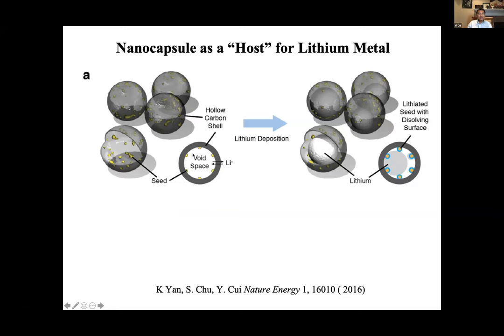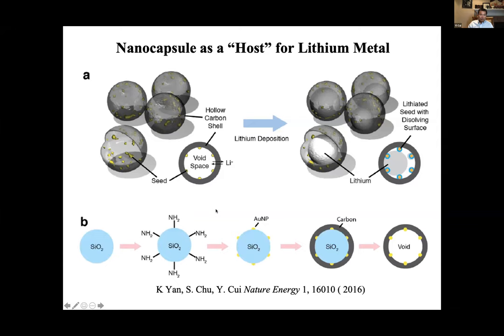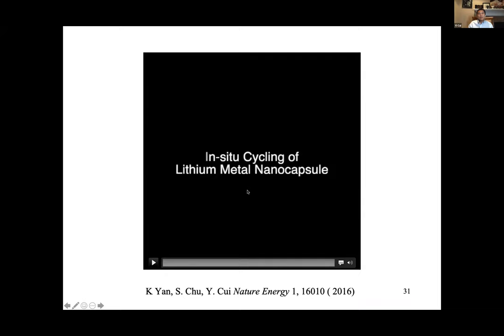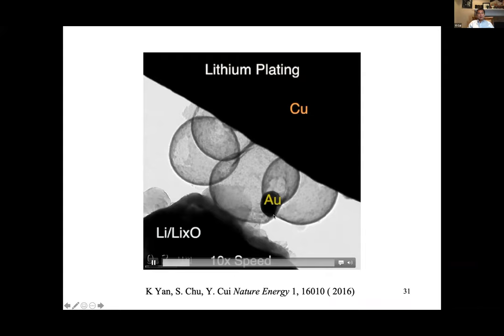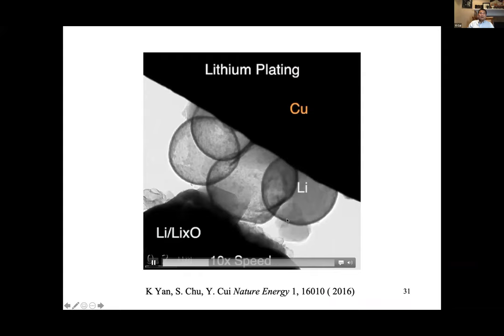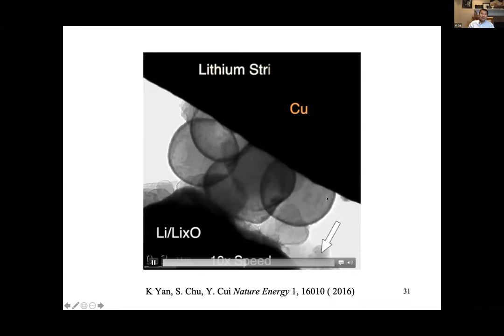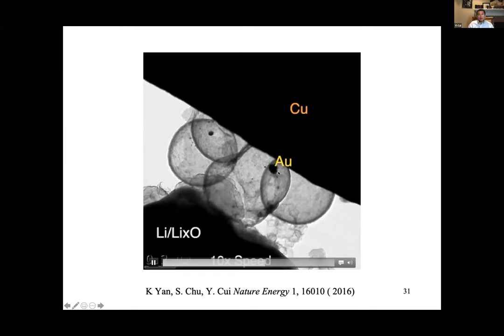This now allows us to design, for the first time, a host for lithium metal. We used hollow carbon spheres about a micron in diameter with gold nanoparticles inside as nucleation seeds — gold is too expensive eventually, but we could use magnesium or zinc instead. When lithium is deposited, it dissolves the gold away, and the gold functions as a nucleation seed. If you strip lithium away, the gold nanoparticles come back in different locations. When you plate again, it can dissolve gold away once more.